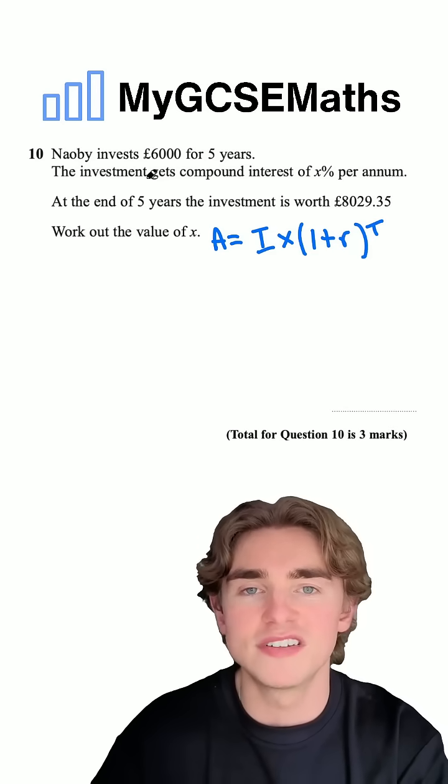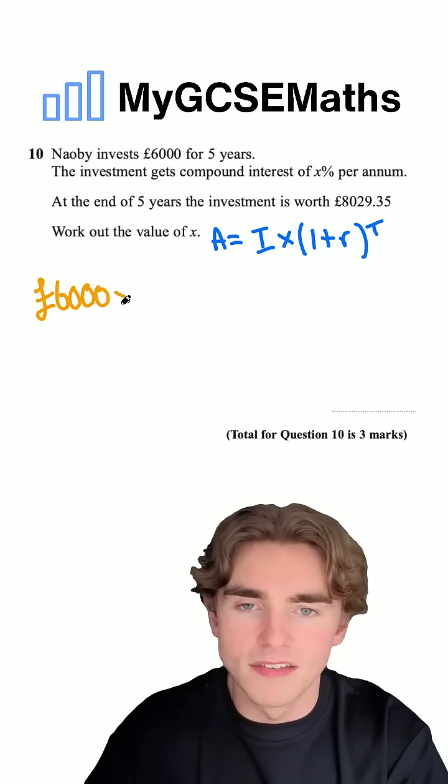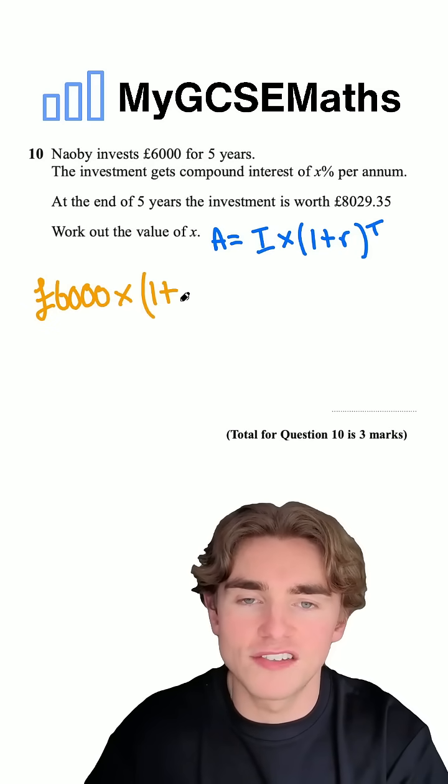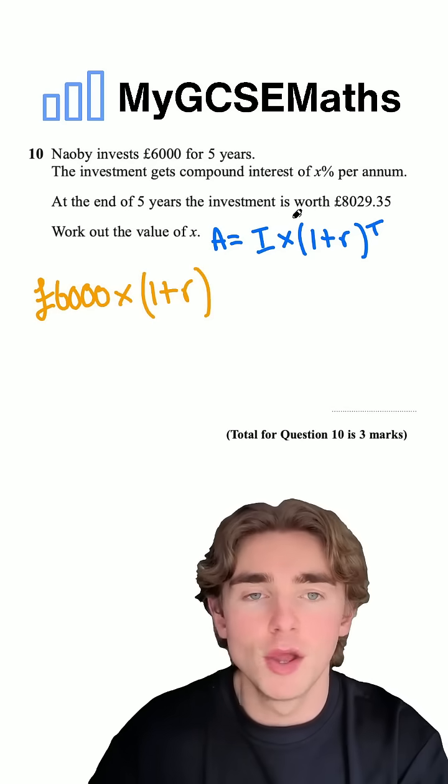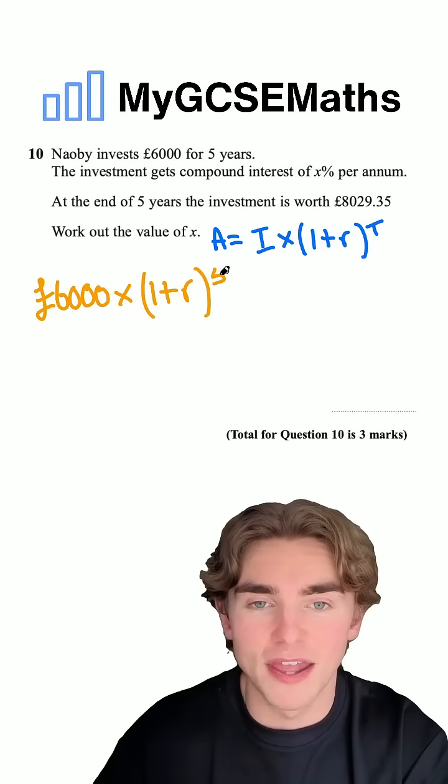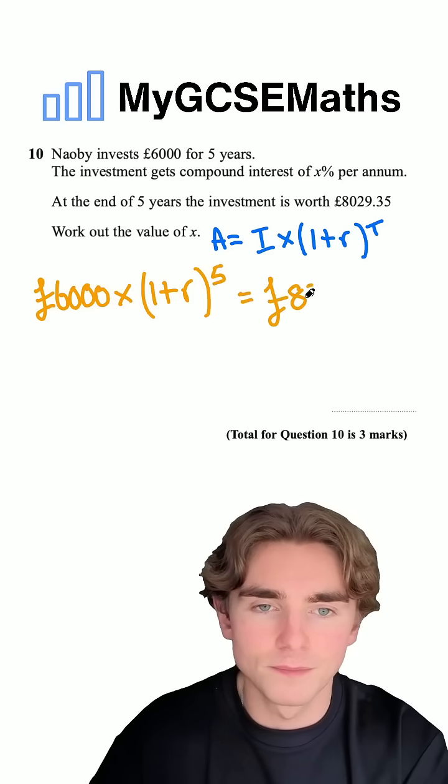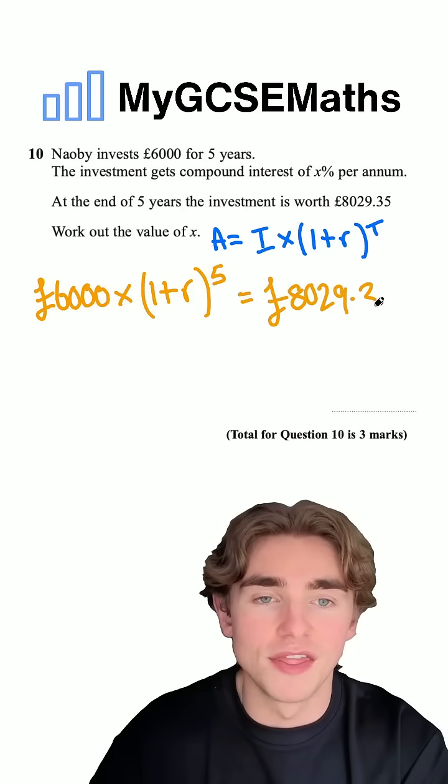So we can say that our initial amount, which is £6,000, times by one plus our interest rate R as a decimal raised to the power of number of time periods. Well, here we're investing for five years. So we get that interest rate five times is equal to £8,029.35.